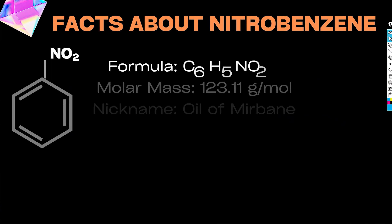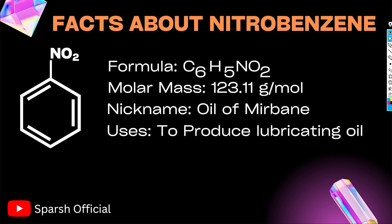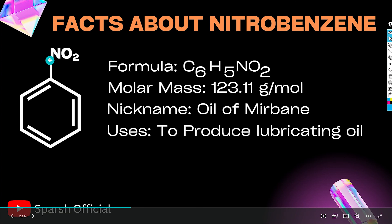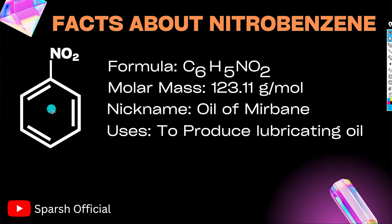Welcome to the world of organic chemistry. Today's topic is nitrobenzene. Here are the basic facts about nitrobenzene. The formula is C6H5NO2. This group C6H5 is called phenyl, and NO2 is the nitro group. Then we have its molar mass. I hope you will remember these facts.